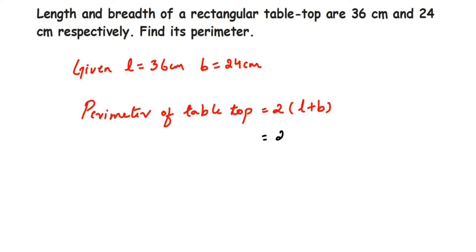So this is 2 into length is 36, so 36 plus 24. Breadth is 24. Now this is equal to 2 into 36 plus 24 is 60, so 2 into 60 is equal to 120. So 120 centimeter. This is the perimeter of table top.